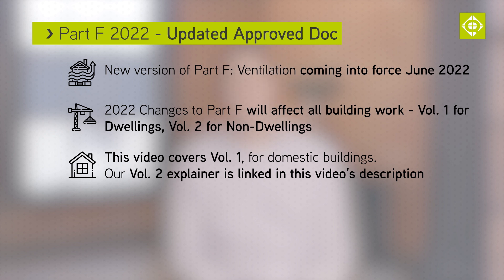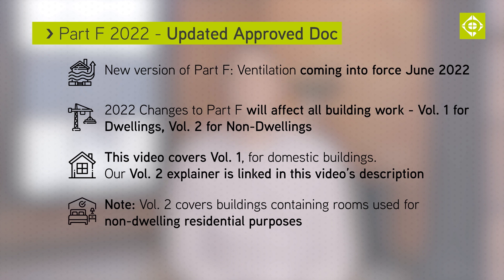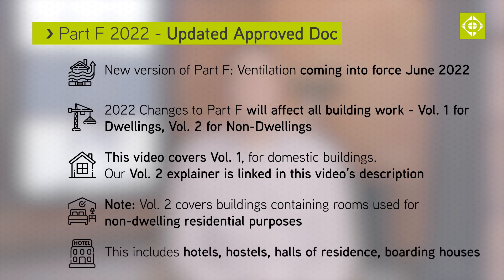Note that although Volume 1 relates to dwellings, Volume 2 covers buildings containing rooms used for non-dwelling residential purposes — for example, hotels, hostels, halls of residence and boarding houses. Both volumes have been updated in response to the significant changes within the 2022 edition of Part L, conservation of energy. Our video explaining these changes is also linked in the description.